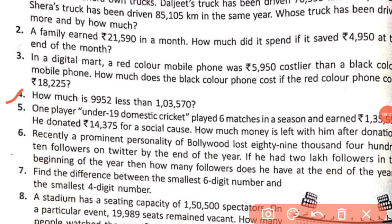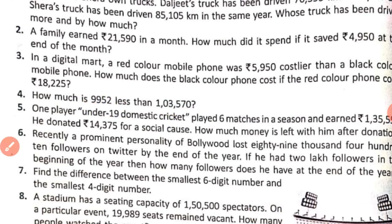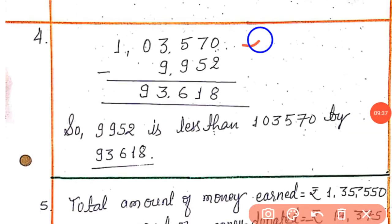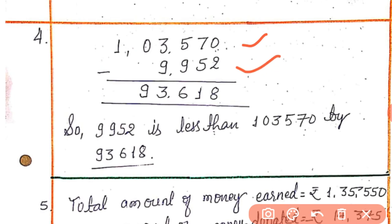Next question, number 4: how much is 9,952 less than 13,570? We subtract 9,952 from 13,570. We write 13,570 minus 9,952. From the ones place, we can't subtract 2 from 0, so the tens place 0 borrows 1. Now it is 10 ones; 10 ones minus 2 ones equals 8.